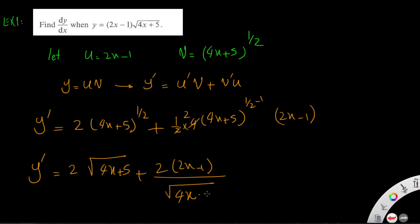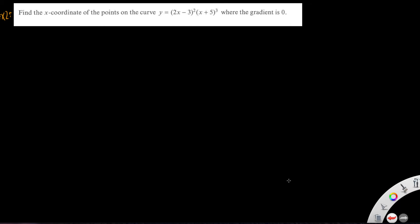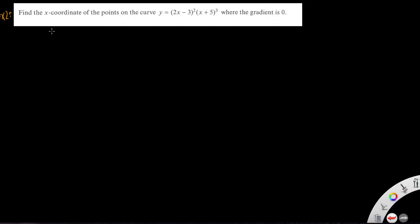Example 2: Find the x-coordinates of the points on the curve y equals (2x minus 3) squared times (x plus 5) cubed where the gradient is zero. As you can see, y is a product of two functions, so let u be (2x minus 3) squared and v be (x plus 5) cubed.